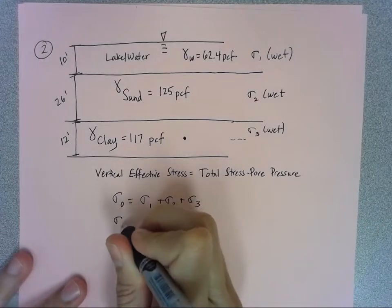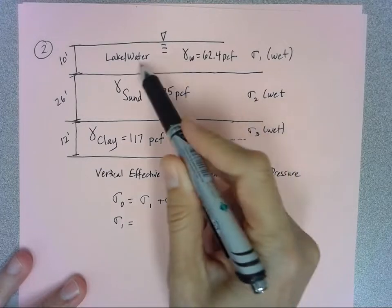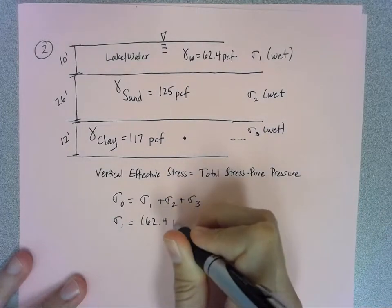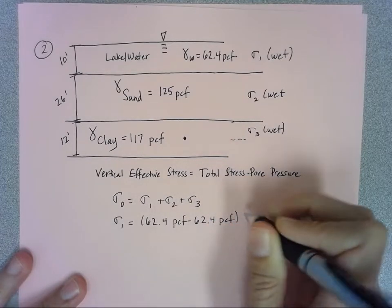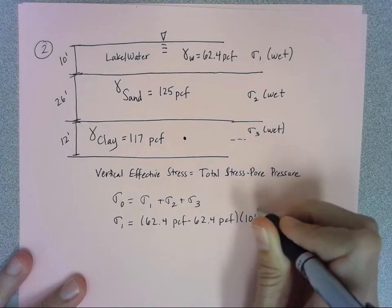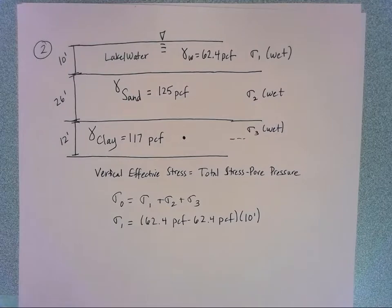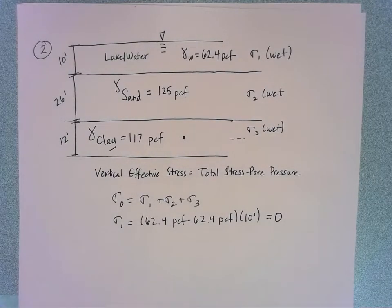When I start with sigma 1, the unit weight is just 62.4 pounds per cubic foot, but I'm subtracting 62.4 pounds per cubic foot. So even though my lake is 10 feet deep - you could think of that stratum as 10 feet thick - it's just going to equal zero because those two zero each other out. I'm subtracting off that pore pressure from the water, and that's all I've got there, so that goes to zero.